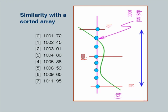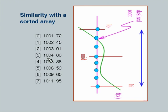Suppose I am searching for 1002. Then 1002 cannot be in the higher part of the array — it has to be in the lower part. Consequently, I should keep low as 0 but move high. If I set high to 3, I would unnecessarily include the midpoint already examined. Since it is clear the midpoint does not contain the given roll, there is no point including it again. So if the midpoint is 3 and I am searching for 1002, I will set high to mid minus 1.